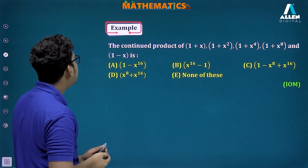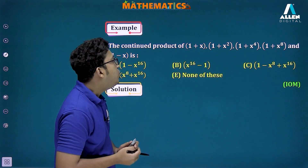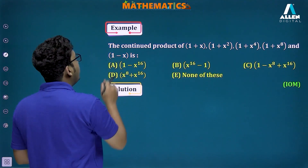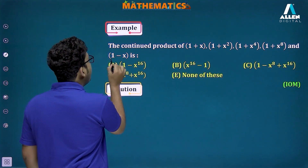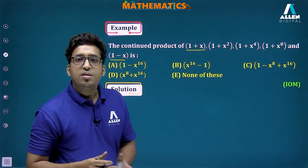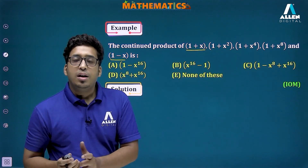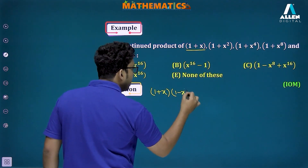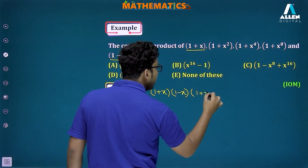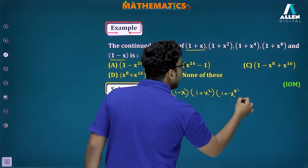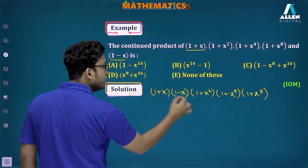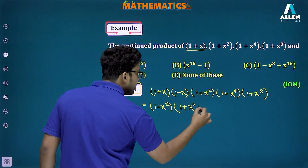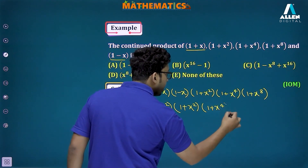Now let's solve some olympiad-level questions. The first question: find the continued product of (1+x)(1+x²)(1+x⁴)(1+x⁸)(1-x). We can observe that (1-x) and (1+x) will multiply with each other. Applying the formula (a+b)(a-b) = a²-b², we multiply (1+x)(1-x) first and write the remaining terms as they are: (1+x²)(1+x⁴)(1+x⁸). So (1+x)(1-x) = (1-x²).